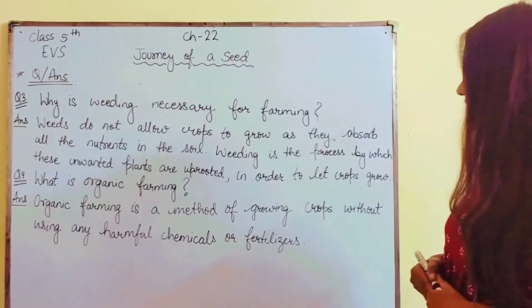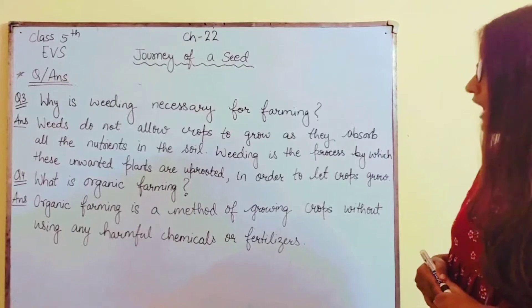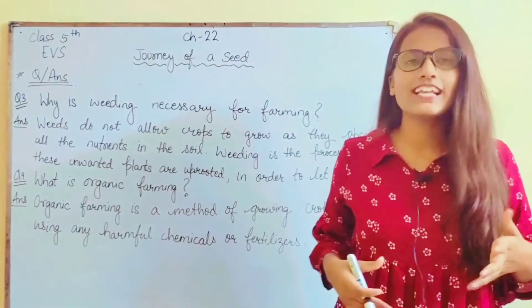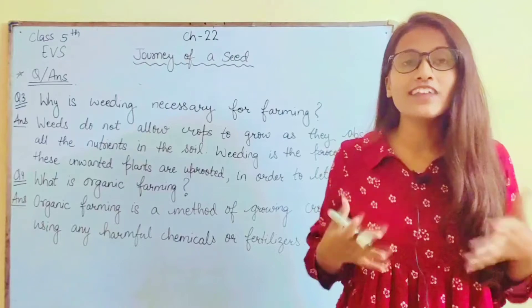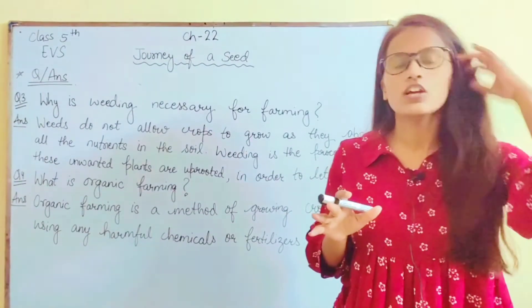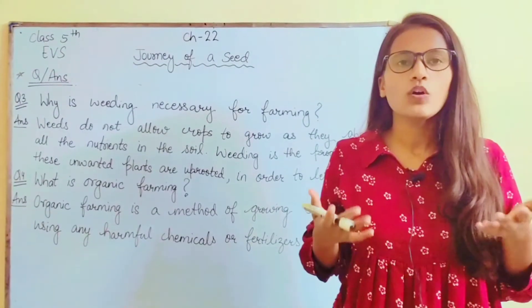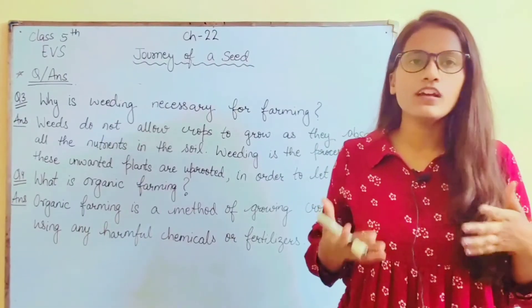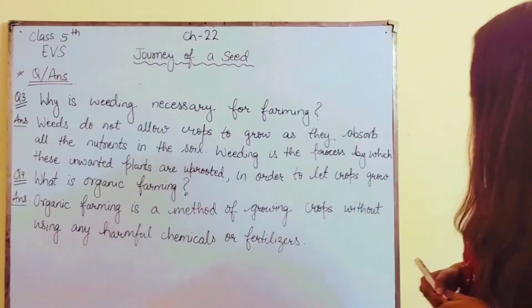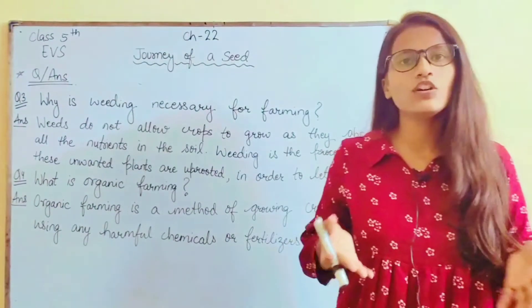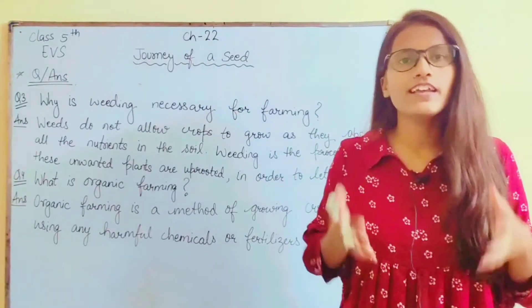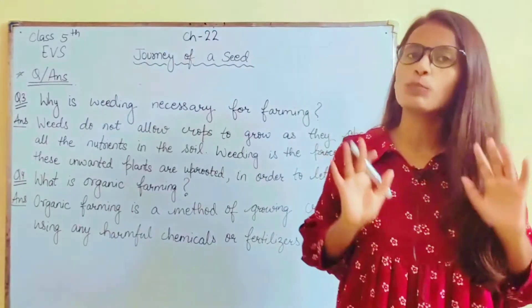Weeding is the process by which these unwanted plants are uprooted. Farmers remove these unwanted plants so that crops can grow properly and get proper nutrients.